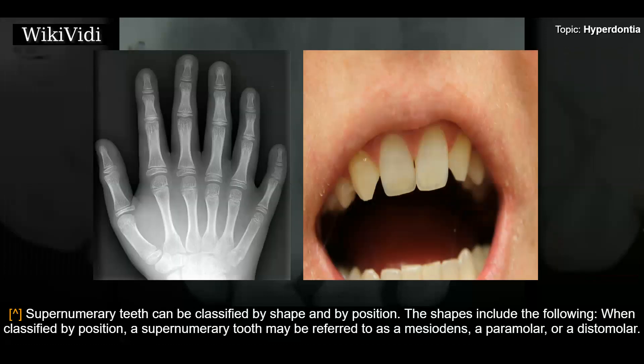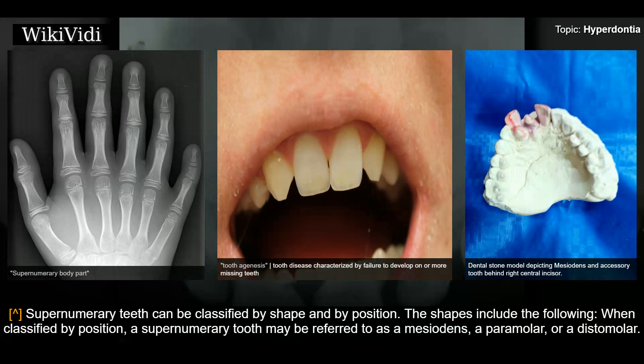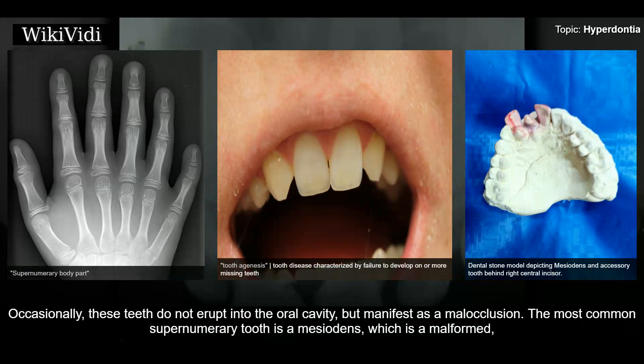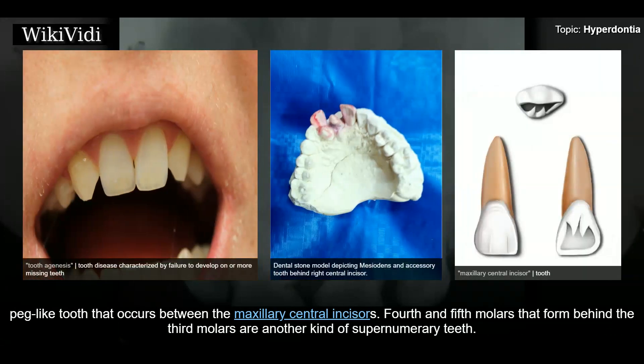Supernumerary teeth can be classified by shape and by position. When classified by position, a supernumerary tooth may be referred to as a mesiodans, a paramolar, or a dystomolar. Occasionally, these teeth do not erupt into the oral cavity but manifest as a malocclusion. The most common supernumerary tooth is a mesiodans, which is a malformed, peg-like tooth that occurs between the maxillary central incisors. Fourth and fifth molars that form behind the third molars are another kind of supernumerary teeth.